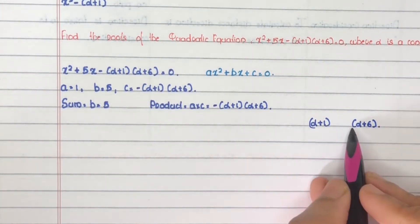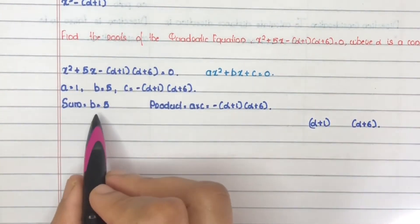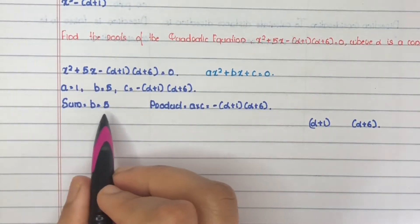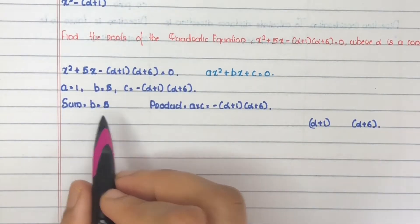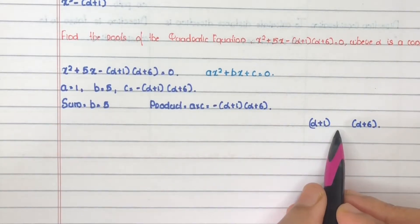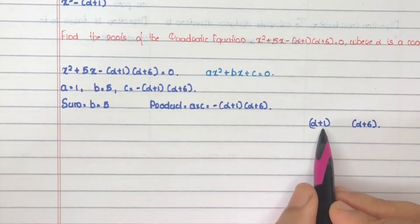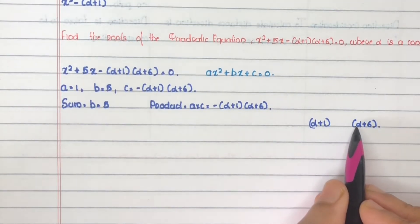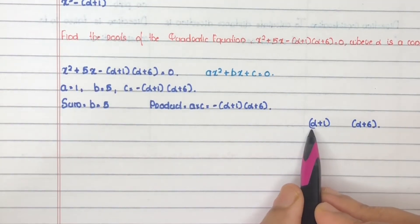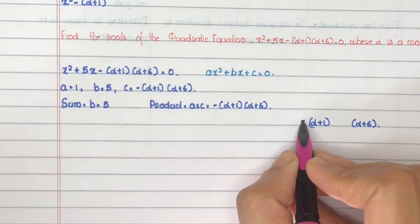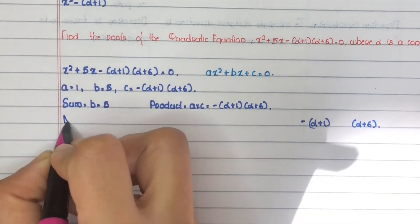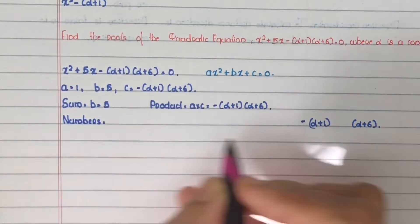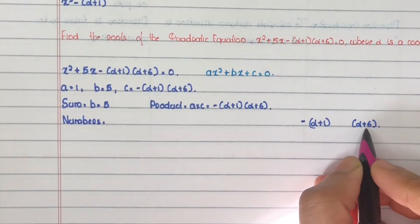Next, find the sign by considering the sum. Here the sum equals plus 5, a positive value, which implies the greatest number must have a positive sign. The greatest number is (alpha plus 6), so it should be positive and (alpha plus 1) should be negative. That way you get 5. So the numbers are minus (alpha plus 1) and (alpha plus 6).